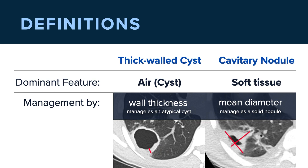For a thin-walled cyst, the dominant feature is air or the cyst, and these will be managed by their wall thickness. So in this patient on the left, the dominant feature is air or cyst, and we're going to manage it based on the wall thickness. For cavitary nodules, the soft tissue component is the dominant feature rather than the cystic or central cavitation. These will be managed as solid nodules, and we will use the mean diameter to derive a Lung RADS classification and management recommendation.